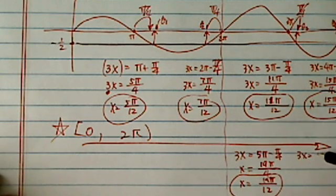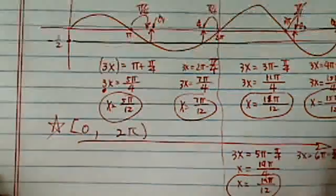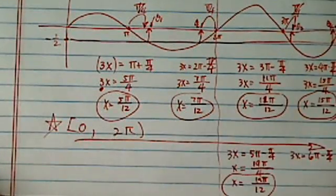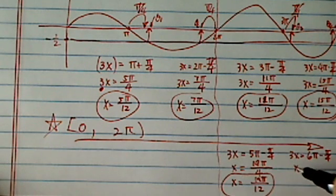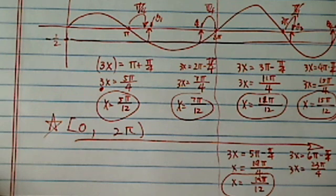Next one over, I have 3x equal to 6π minus π/6. It's really squeezing over here. I hope you can still see it. x, 3x is equal to 35π/6, 35π. I think that's the last one. So it's 18, 35π.